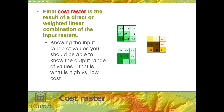On the cost raster, you should be able to predict, for validation purposes, what the minimum and maximum values might be. Look at the minimum and maximum values across all input rasters and think about what the minimum and maximum of the output should be. For example, in the first raster the minimum value is 1.32, and the maximum value in both rasters is 2.04, so 1.32 plus 2.04 would be the theoretical maximum output value.